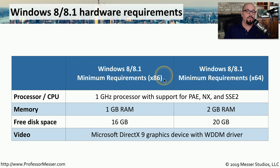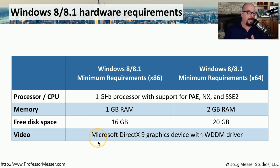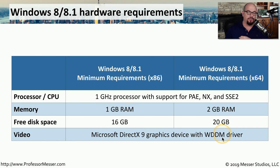The 32-bit version requires 1 gigabyte of RAM, and the 64-bit version doubles that to 2 gigabytes. You need 16 gigabytes of free disk space to install the 32-bit version and 20 gigabytes for the 64-bit version. For video, both versions require a Microsoft DirectX 9 graphics device with a driver compatible with the Windows Display Driver Model.